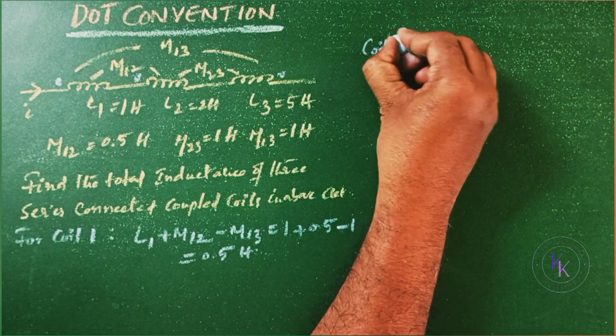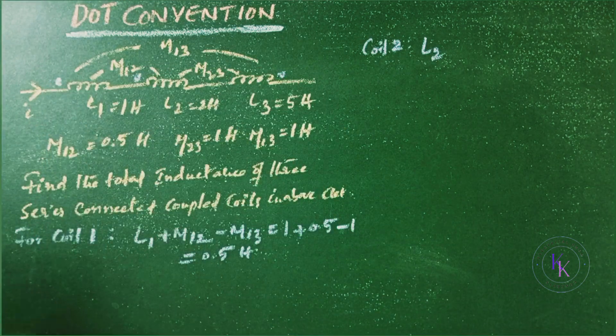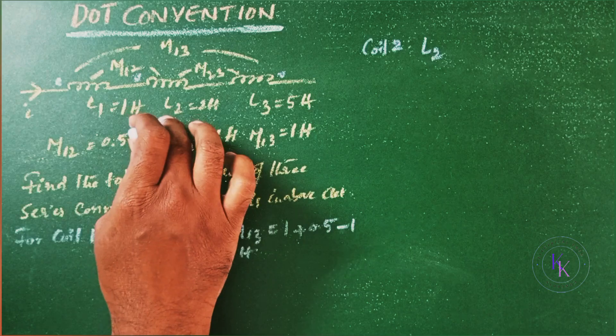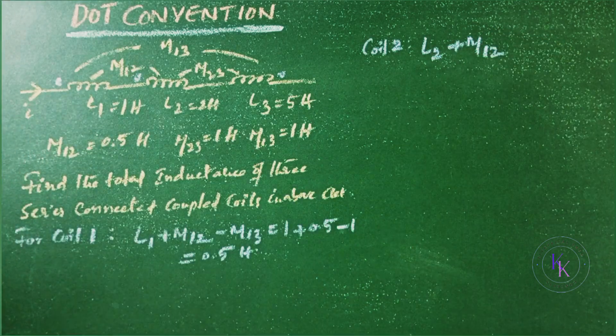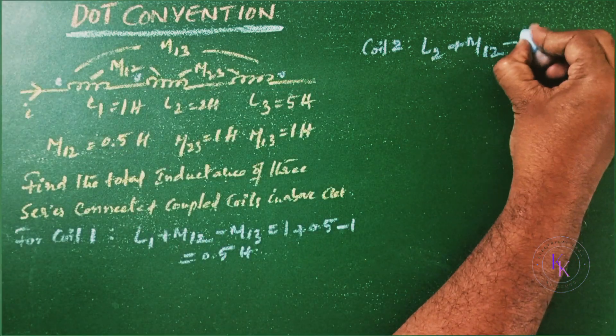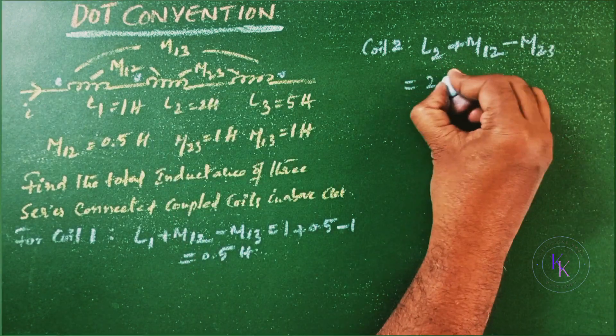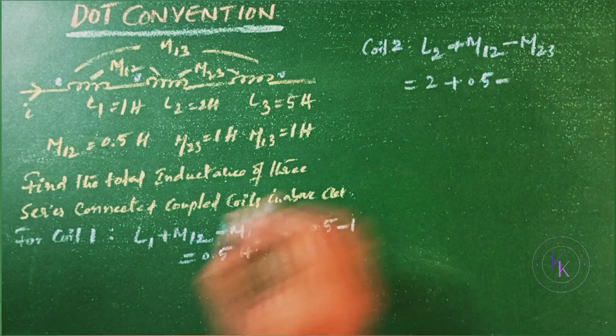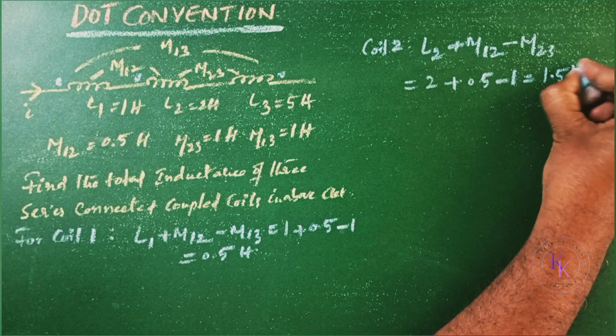For coil II, L2 is the self inductance. Here also L2 is connected to L1 as well as L3 mutually. So first we will consider these two. Then L2 current is entering, L1 current is entering, so plus M12. Whereas L2 and L3, here the current is entering, here the current is leaving, so the mutual inductance will be negative M23. Now substitute the values. L2 is 2 Henrys plus M12 is 0.5 minus M23 is 1 Henry which equals to 1.5 Henry.